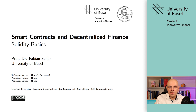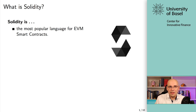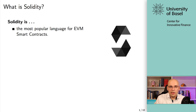Let's get started with the basics of the Solidity programming language. The first thing you have to know is that Solidity is the most popular programming language for EVM-based smart contracts. What actually gets executed on the EVM, what gets executed on the blockchain as part of the consensus, is bytecode. Solidity is an abstraction that helps you write something in human-readable code that later gets compiled to bytecode, which is then executed on the blockchain. It's a high-level human-readable language with influences from C++, Python, and JavaScript.